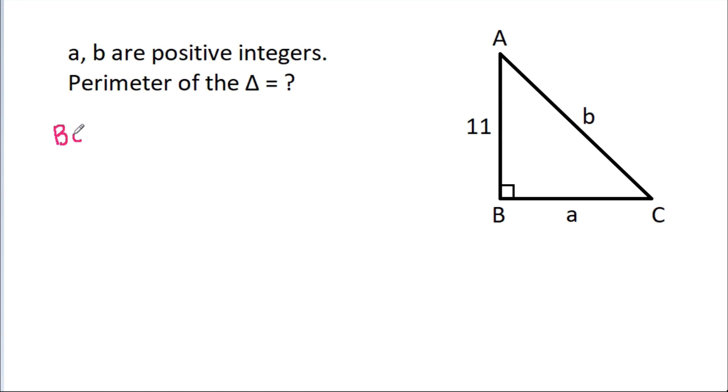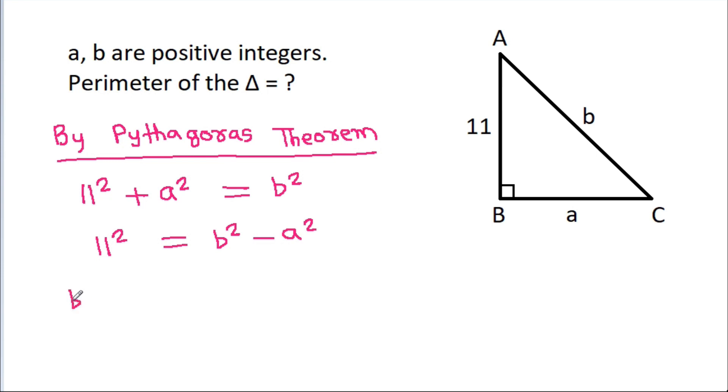So, by Pythagorean theorem, 11² + a² = b². Rearranging this, 11² = b² - a².